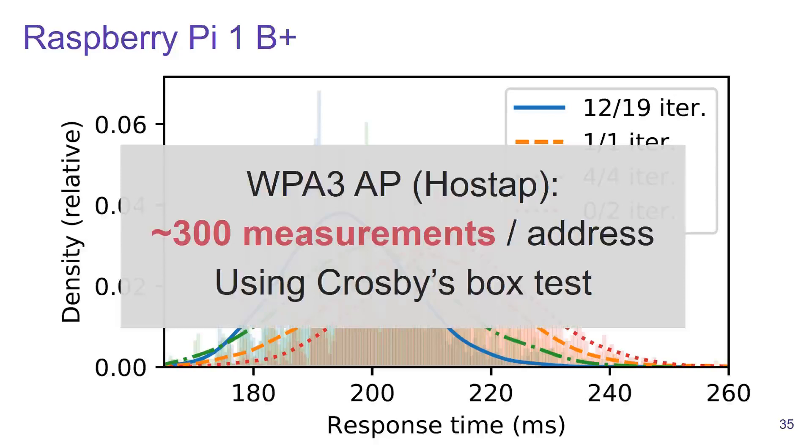Here we had to make more timing measurements per MAC address, about 300, but with these measurements we again have enough information to perform an offline dictionary attack against Dragonfly.